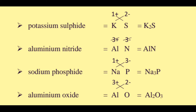After crossing, potassium gets subscript 2 and sulfide gets subscript 1. The formula for potassium sulfide is K2S.